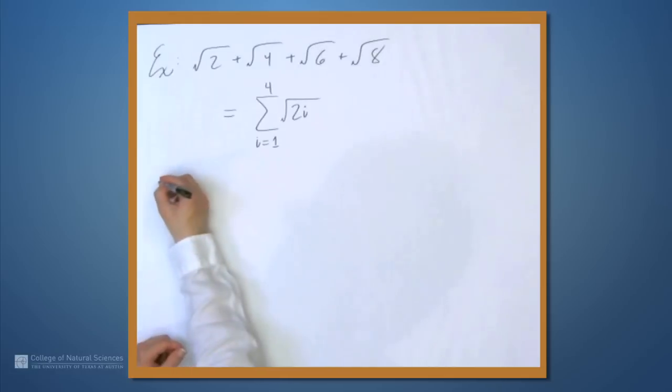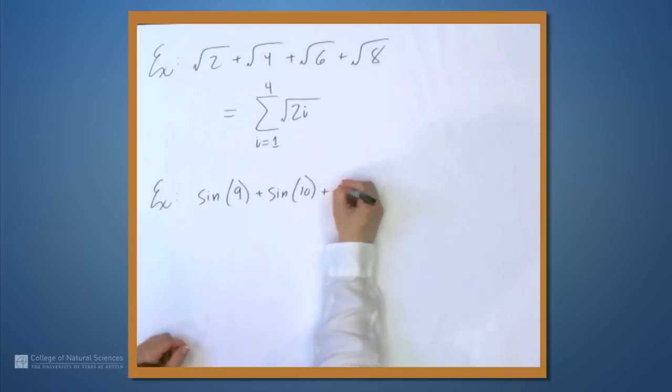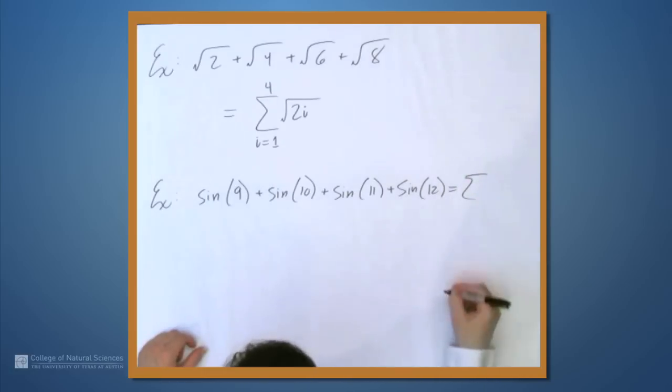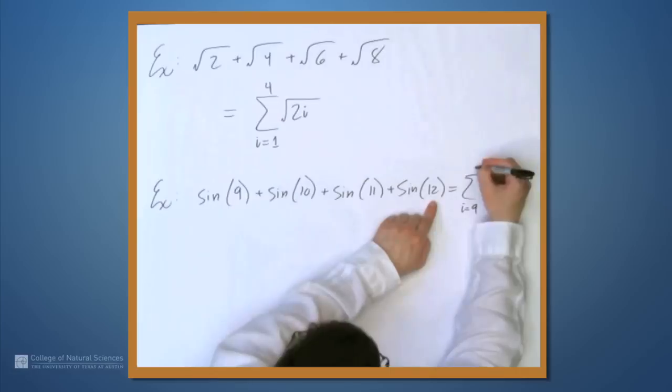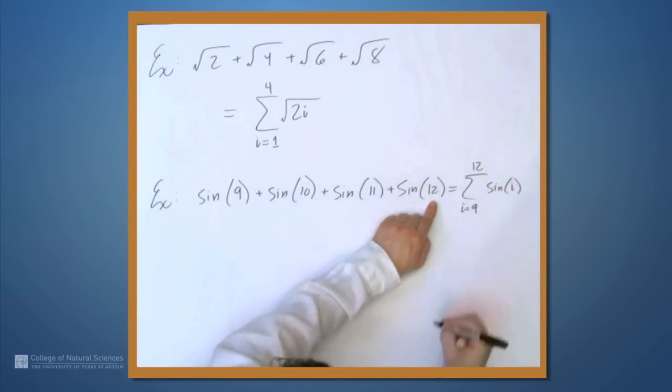And you can do this, you can use this notation for things that don't look very pretty. So we can have something like sine of 9 plus sine of 10 plus sine of 11 plus sine of 12. This is the sum from i equals 9 to 12 of sine of i.